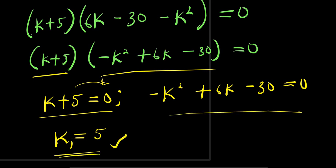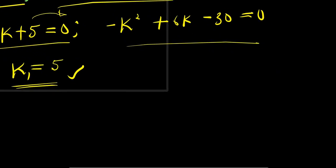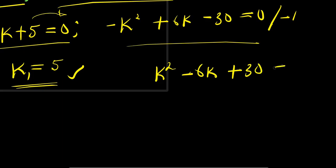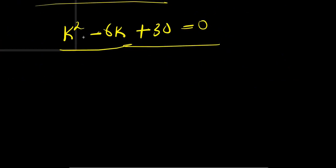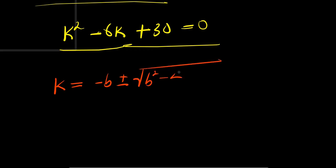To solve minus k squared plus 6k minus 30 equals zero, we first multiply through by negative 1 to get k squared minus 6k plus 30 equals zero. We solve this using the quadratic formula: k equals negative b plus or minus square root of b squared minus 4ac, all divided by 2a. Here a equals 1, b equals negative 6, and c equals 30.